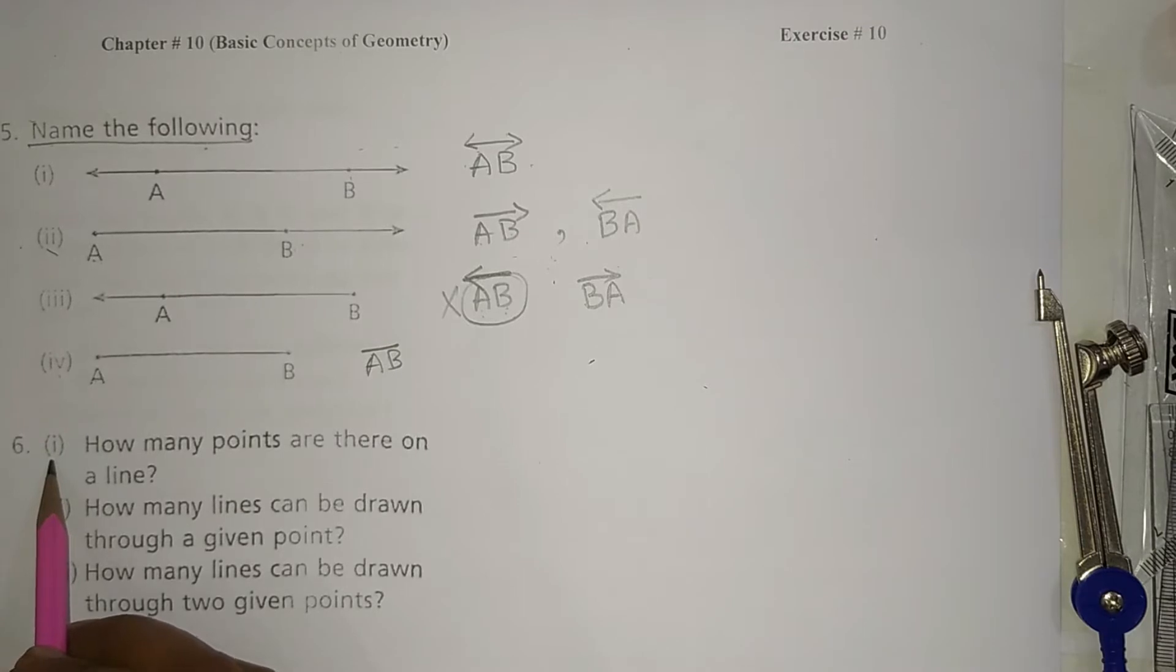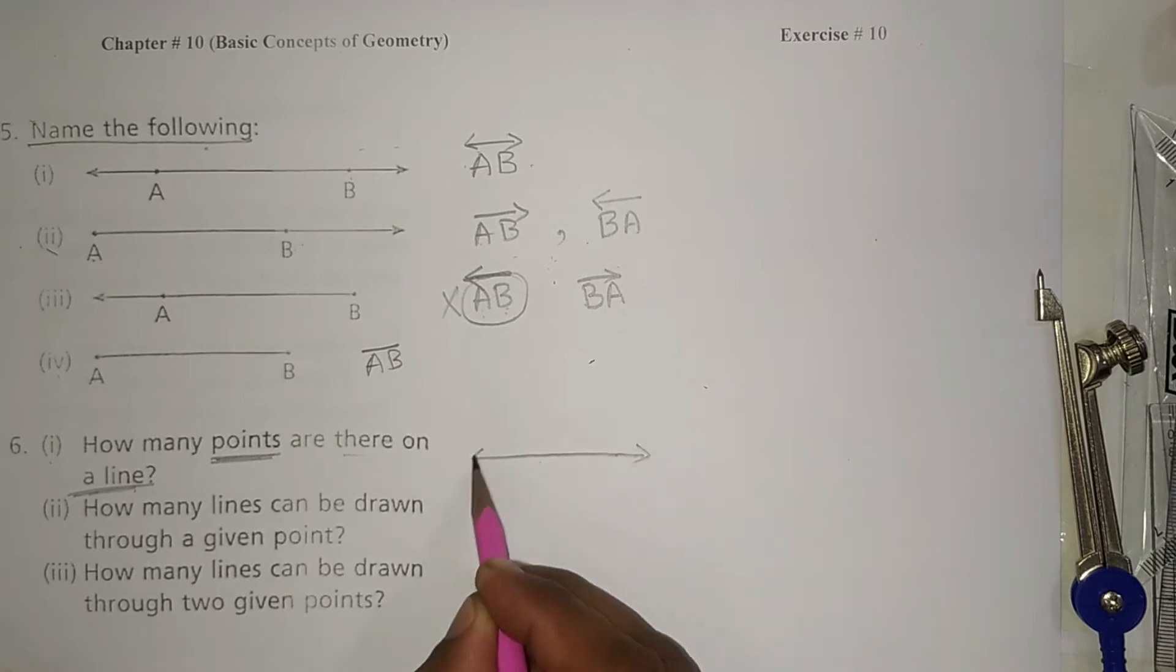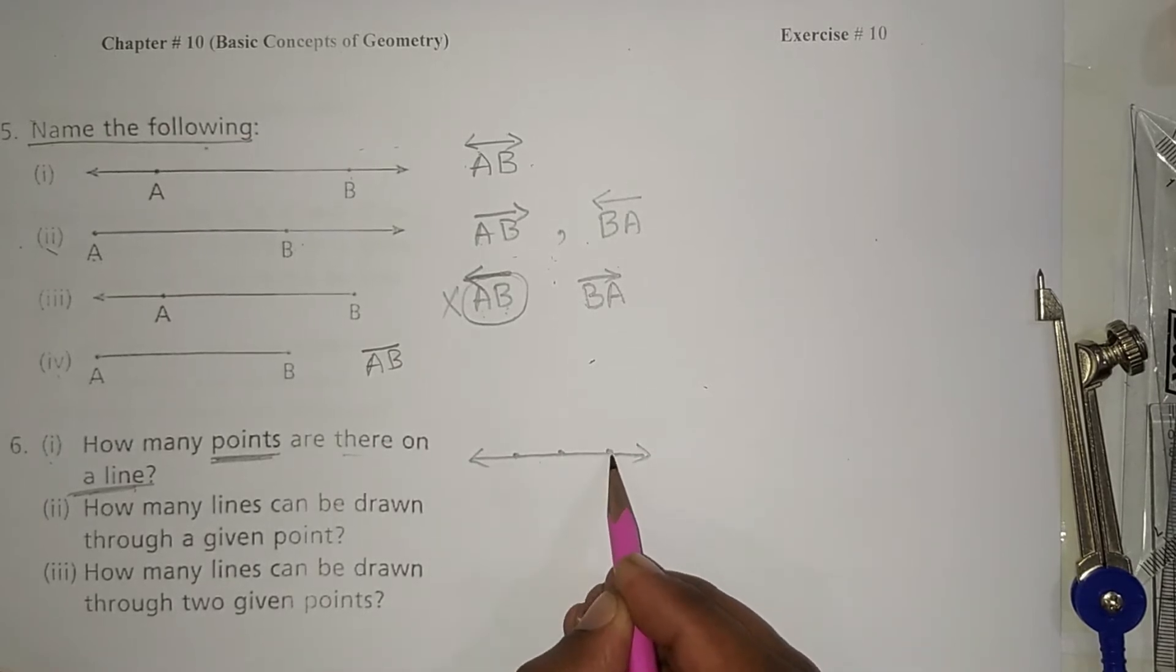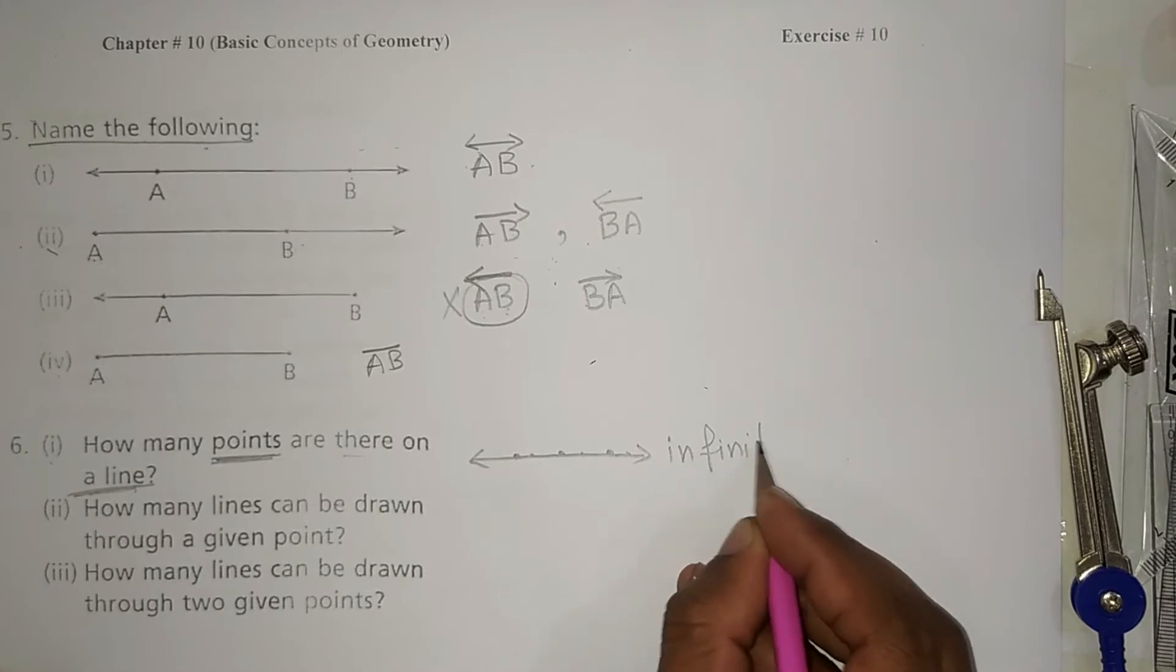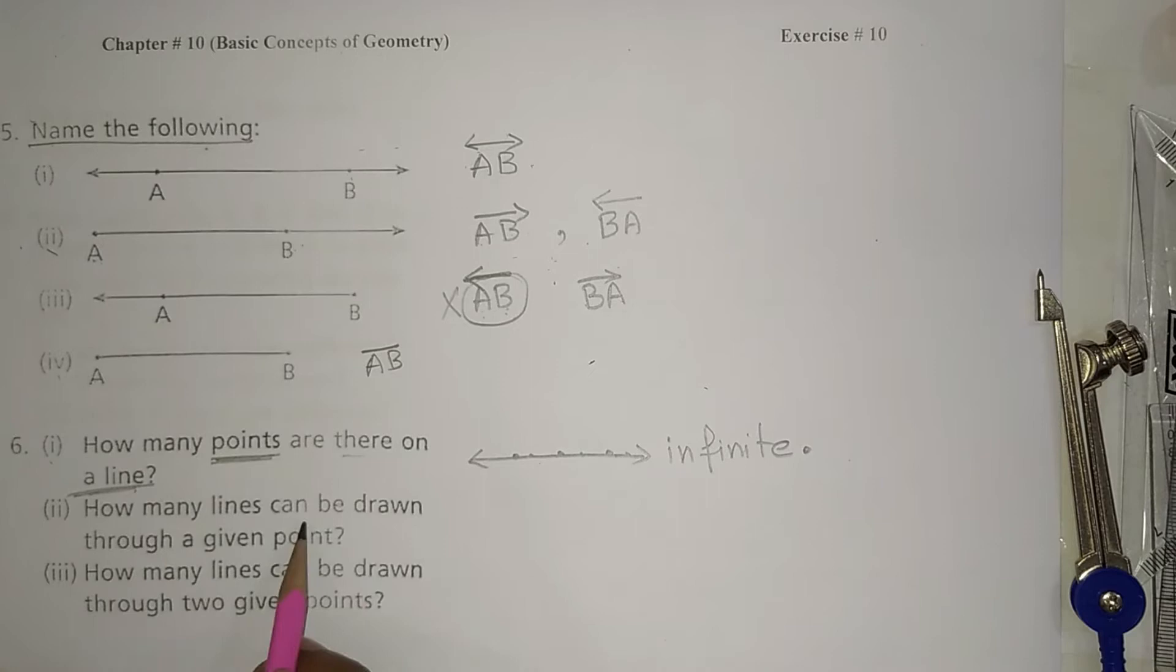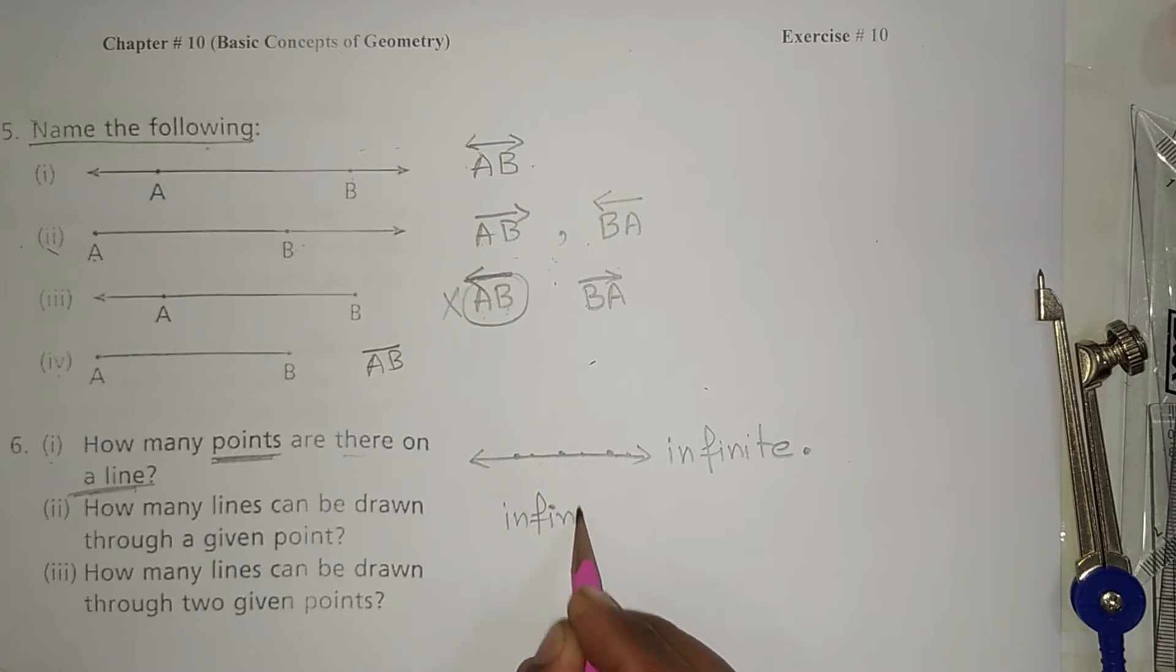First is question number six. How many points are there on a line? Infinite points. How many lines can be drawn through a given point? Through a given point, we can write infinite number of lines. We can draw infinite number of lines.